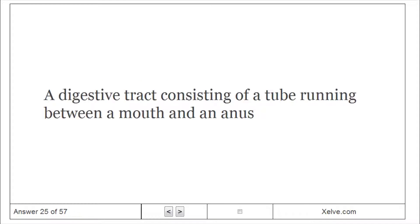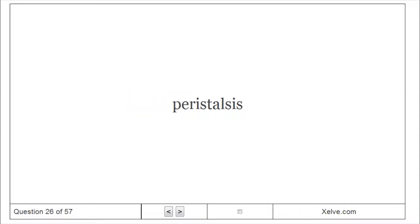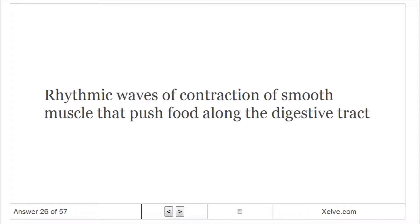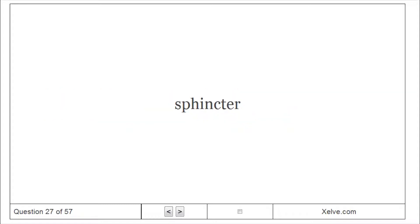Peristalsis – rhythmic waves of contraction of smooth muscle that push food along the digestive tract. Sphincter – a ring-like valve consisting of modified muscles in a muscular tube such as a digestive tract. It closes off the tube like a drawstring.